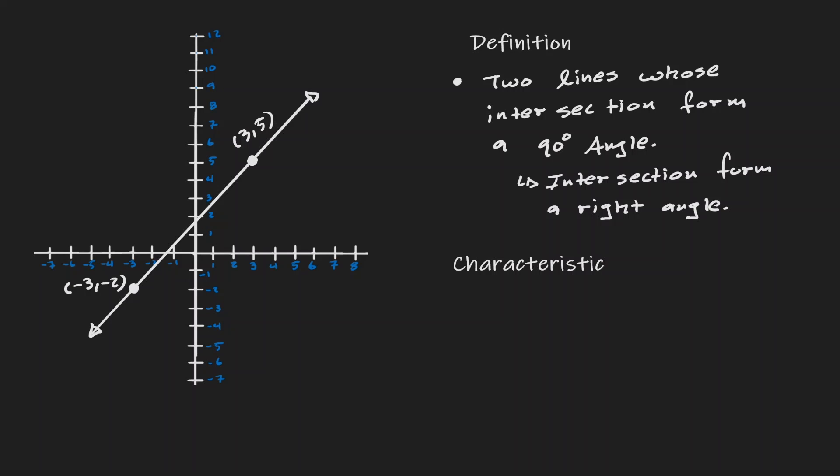Now let's identify the direction of this line. Let's look at its vertical distance. If we start at negative 2 and go to 5, we travel 7 units. And if we start at negative 3 and finish at 3, then we travel a total of 6 units to the right.